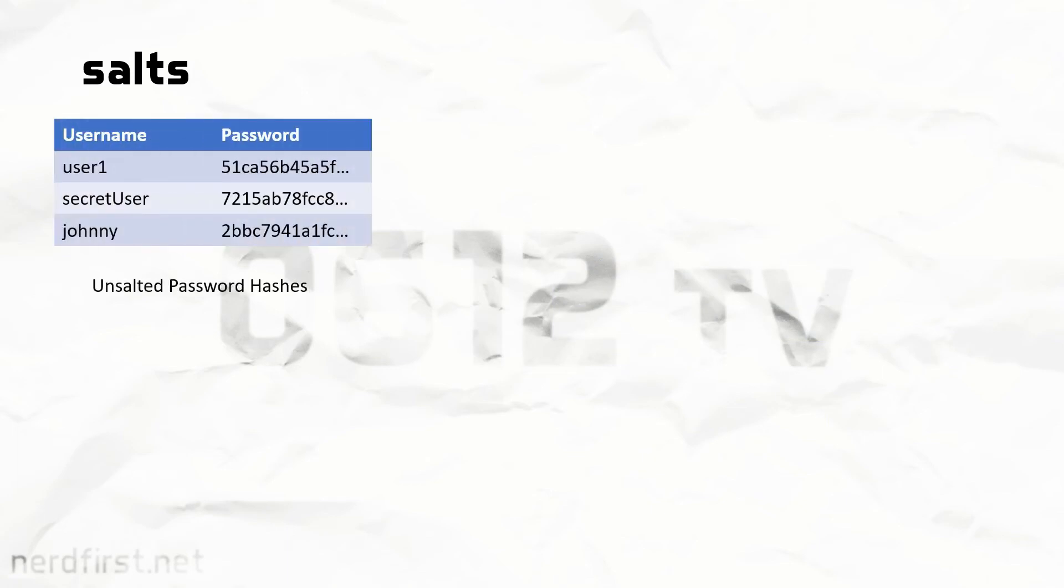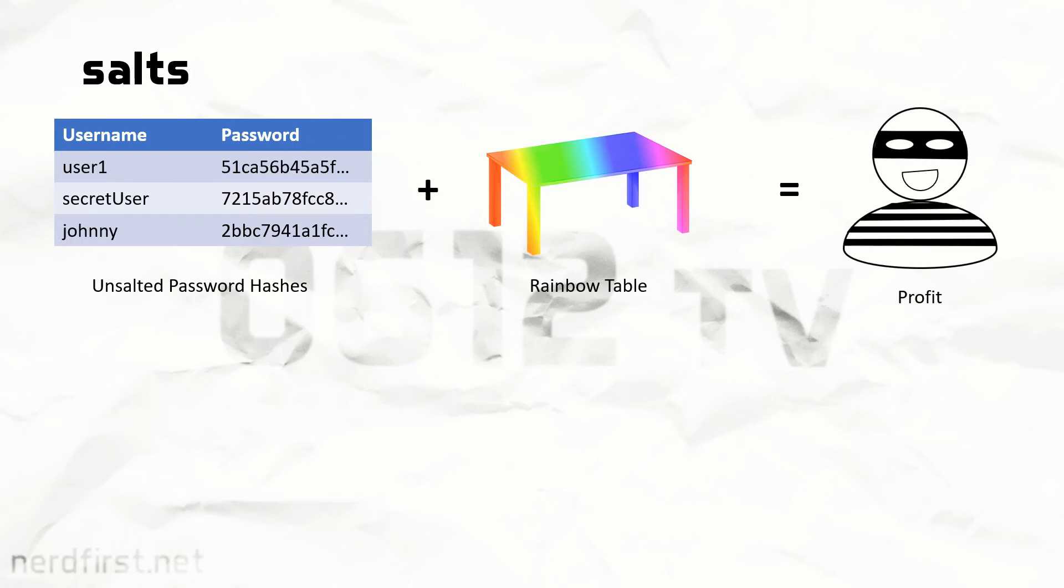If we have a stolen table of unsalted hashes, what we can then do is we can use a single rainbow table, and basically try and figure out all the passwords. Since a rainbow table is pre-computed, this could be a fairly fast process. All the hard work has already been put in during the construction of the rainbow table. Its computational cost when actually put in use is negligible.